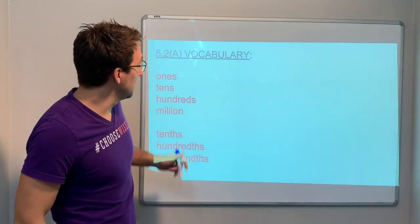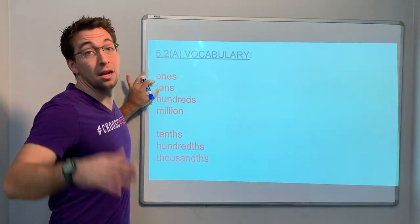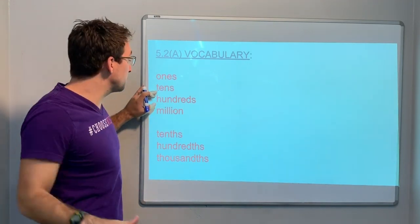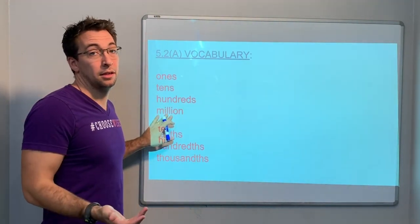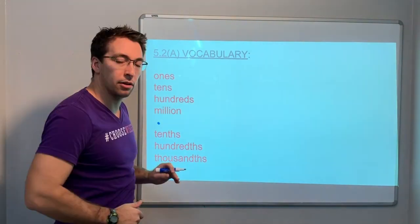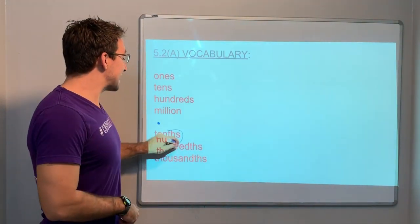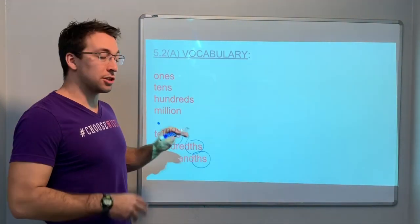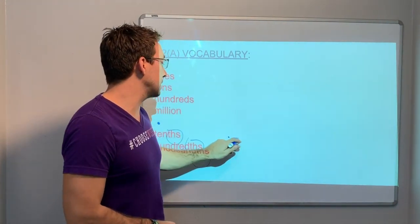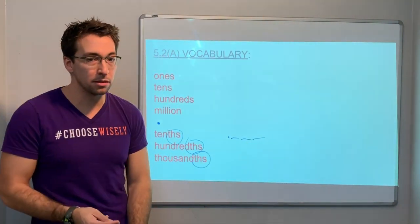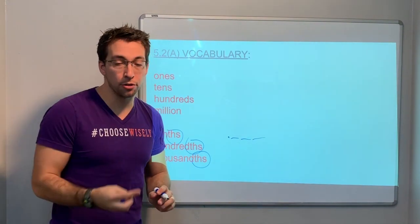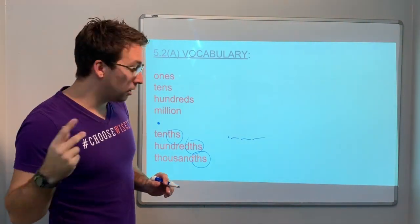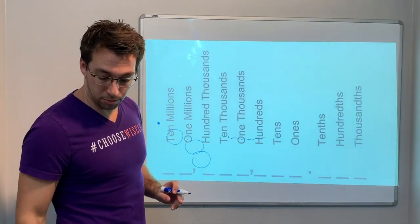So if we look at that, we need to know the ones place, the tens place, the hundreds place, the millions place, and the decimal. We need to know the tenths, hundredths, thousandths. So these are after the decimal. Tenths place, hundredths place, thousandths place. The thousandths place is the third digit in the decimal place.